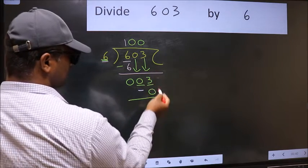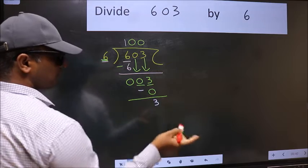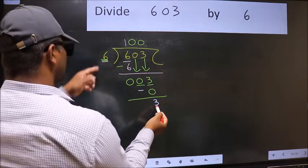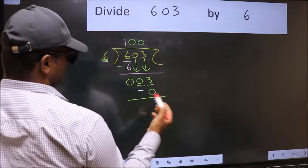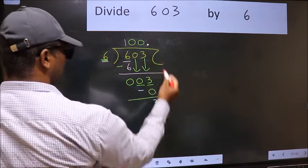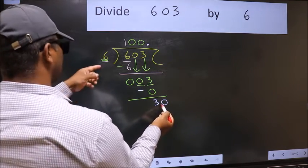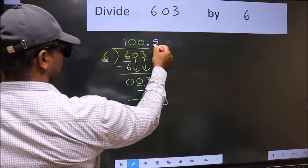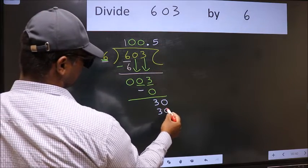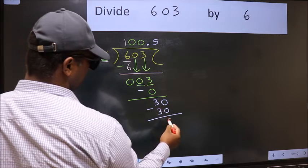Over here, we did not bring any number down, and 3 is smaller than 6. So now we can put dot and take 0. So 30. When do we get 30 in 6 table? 6 fives, 30. Now we should subtract. We get 0.